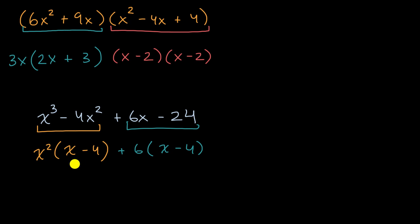And now you are probably seeing the home stretch where you have something times x - 4, and then something else times x - 4. And so you can, sometimes I like to say, undistribute the x - 4 or factor out the x - 4.